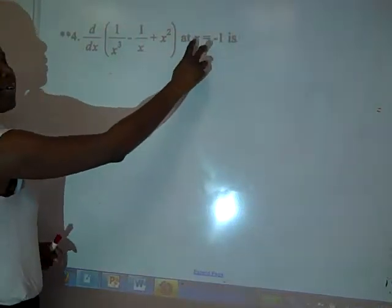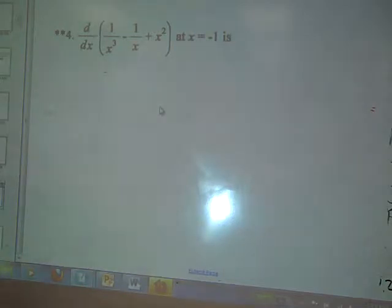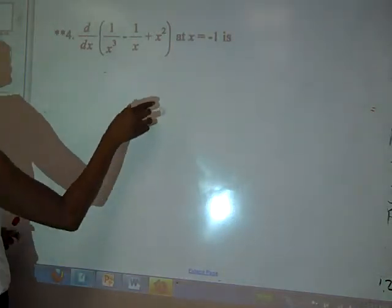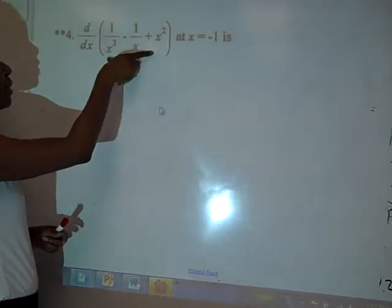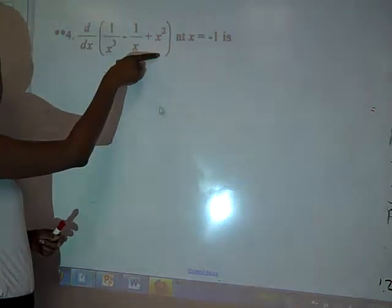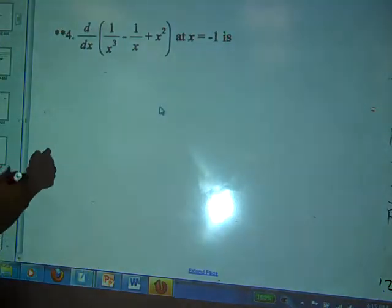And later they want me to find that derivative at x equals negative 1. What I'm basically doing is finding the slope of the line tangent to this curve when x is negative 1. So if you were to look at a picture of this, you're finding the slope of the line when x is negative 1. That gives you the tangent line.